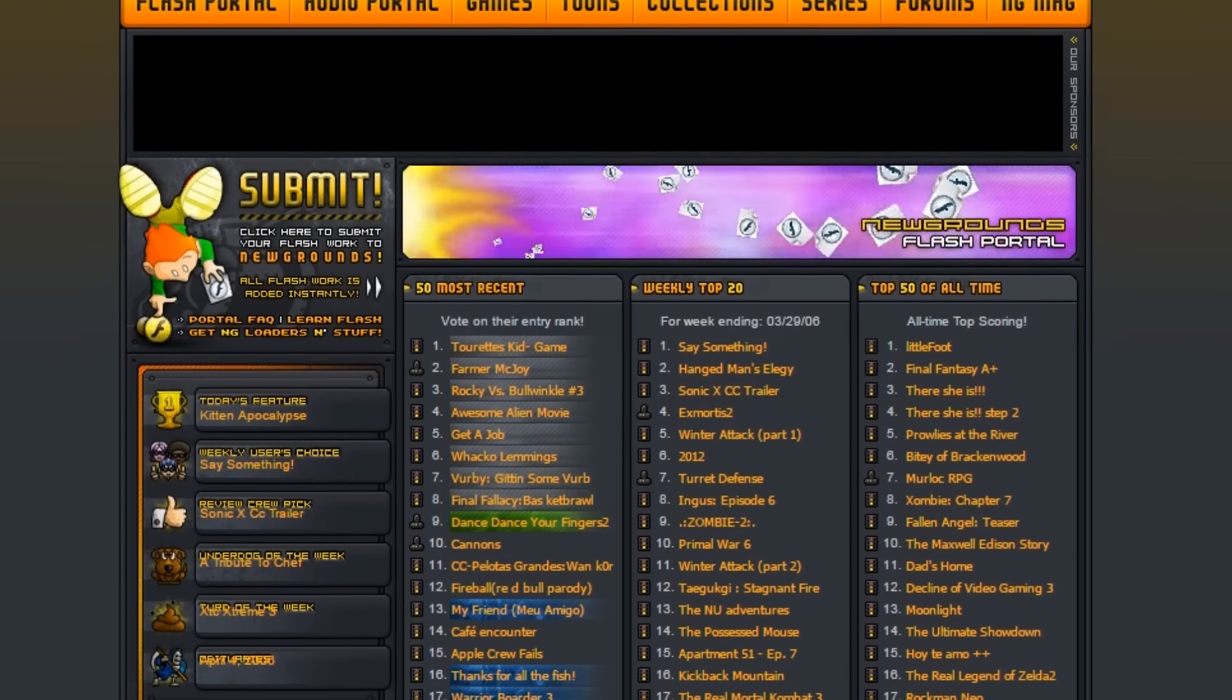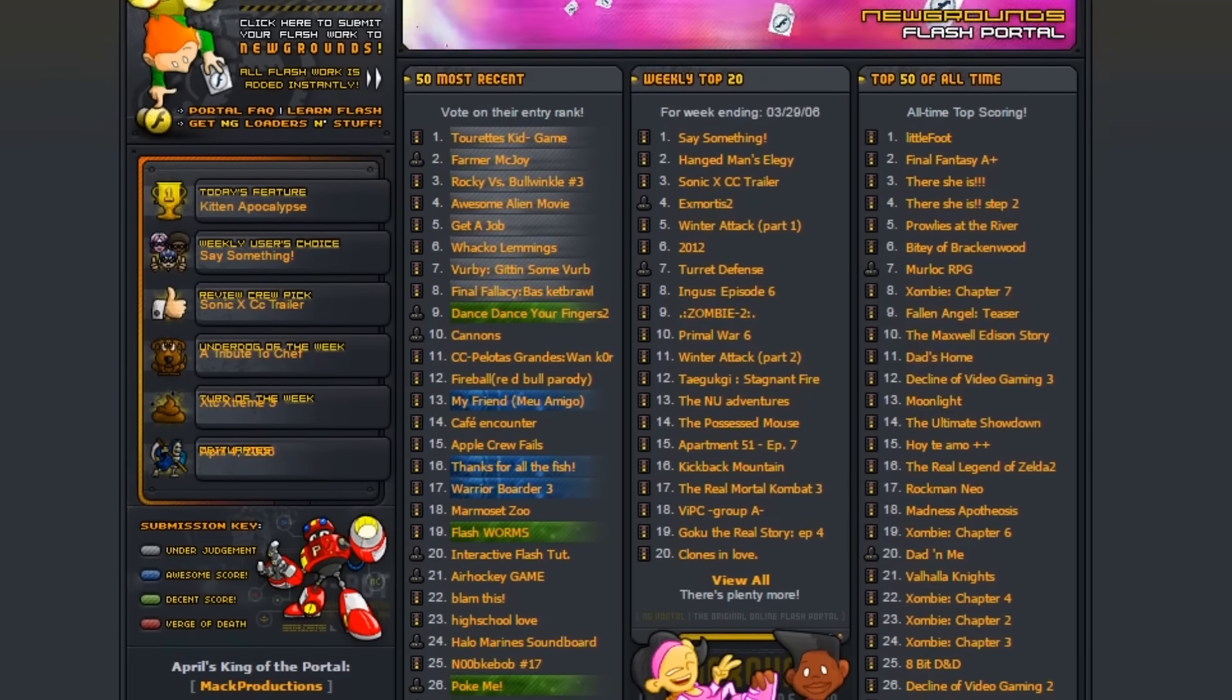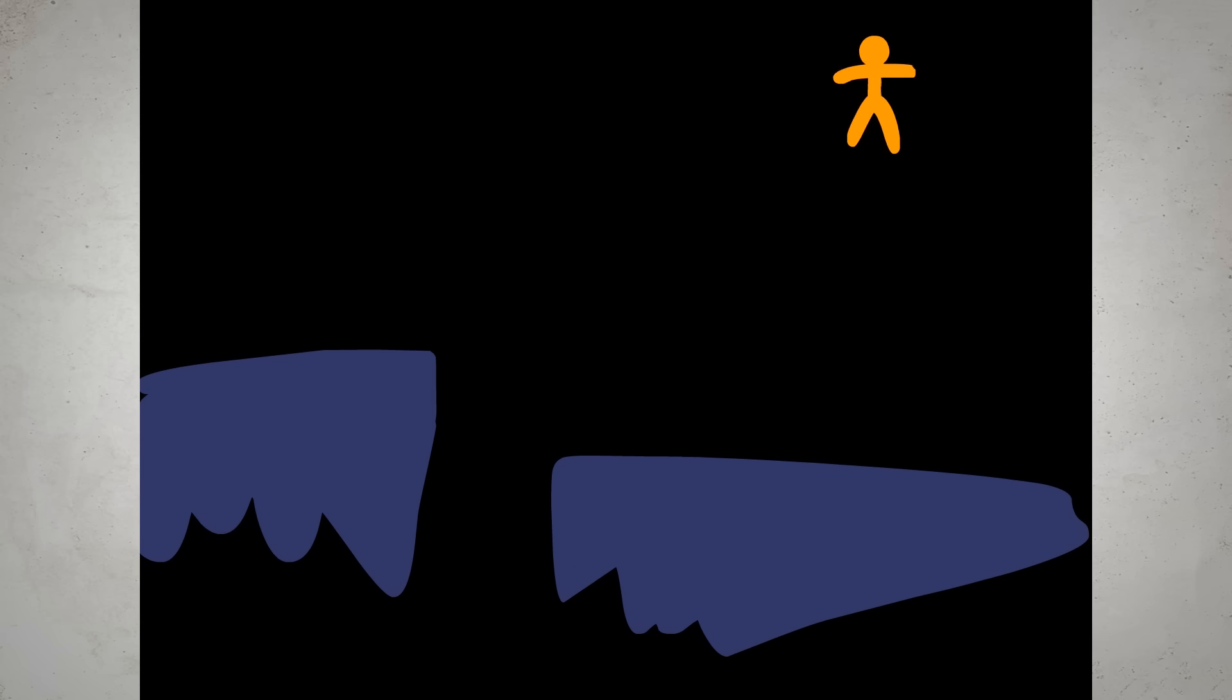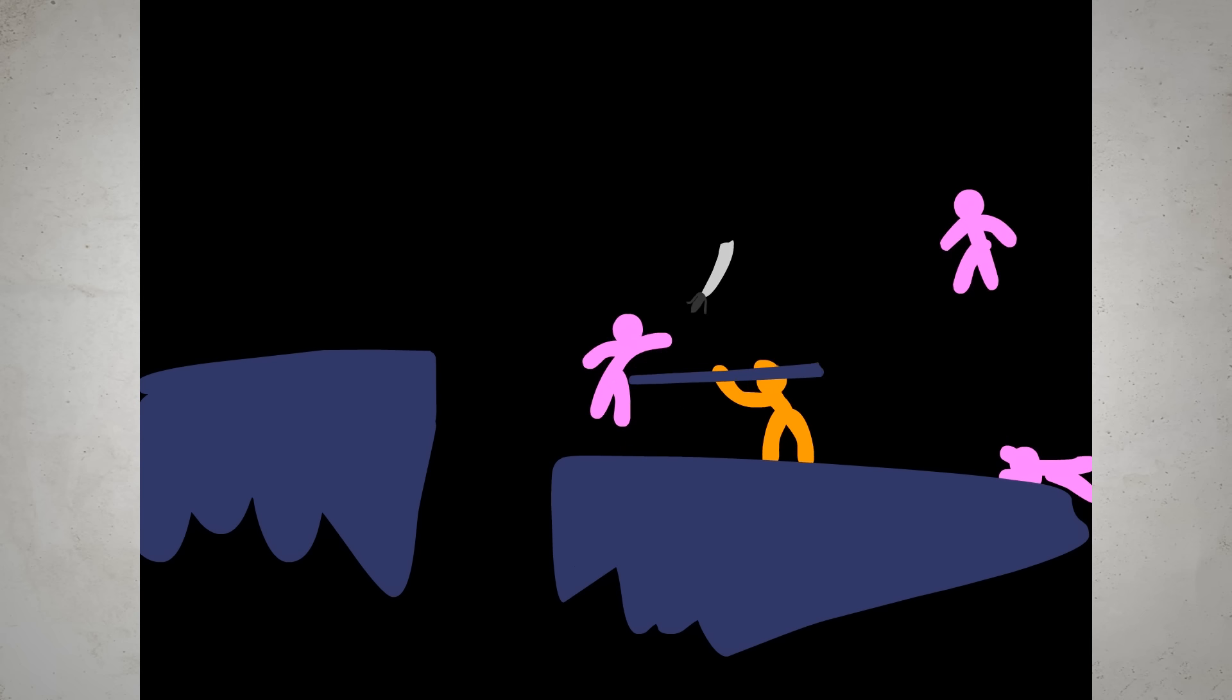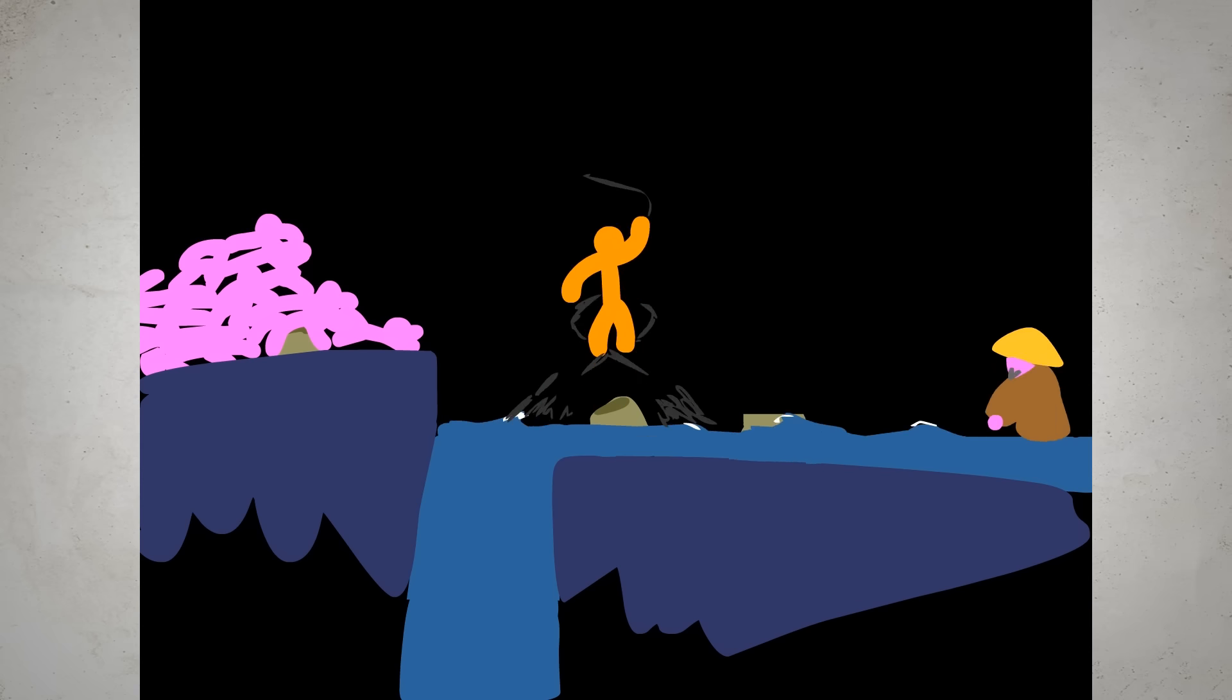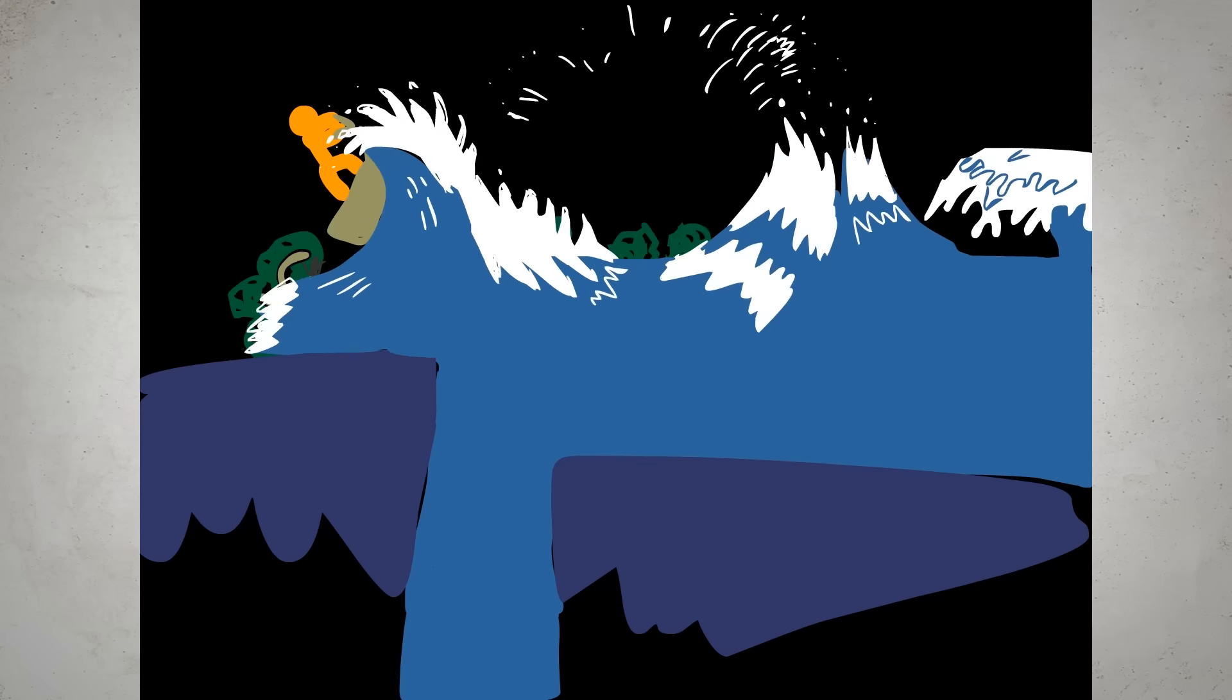The amazing thing about this website is that all animations go directly to the front page and get reviewed by anyone who visits to determine if it deserves to stay on the front page. The first full-length Flash animation that I made was called Pink Army, and involved an orange stick figure fighting an army of pink stick figures. I posted it on Newgrounds, and it did alright. It didn't get a bad score, which I was happy about, so I claimed my victory and moved on.